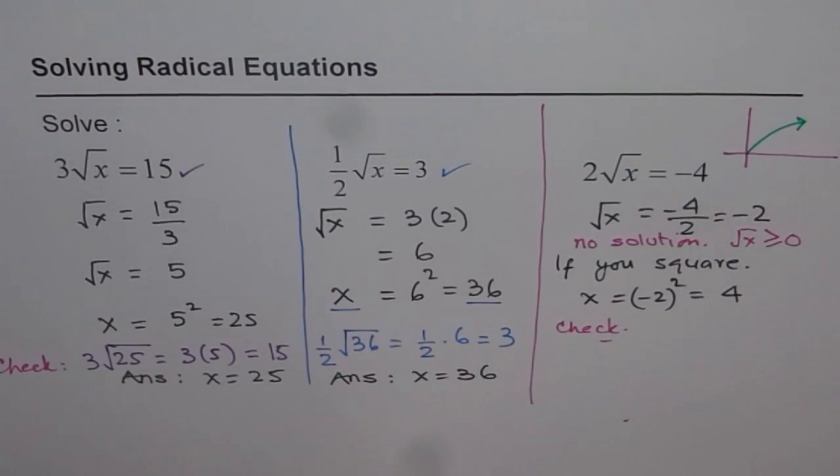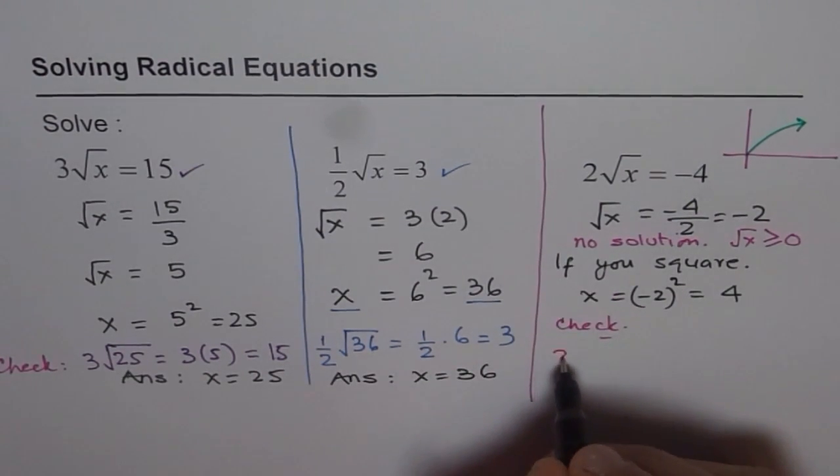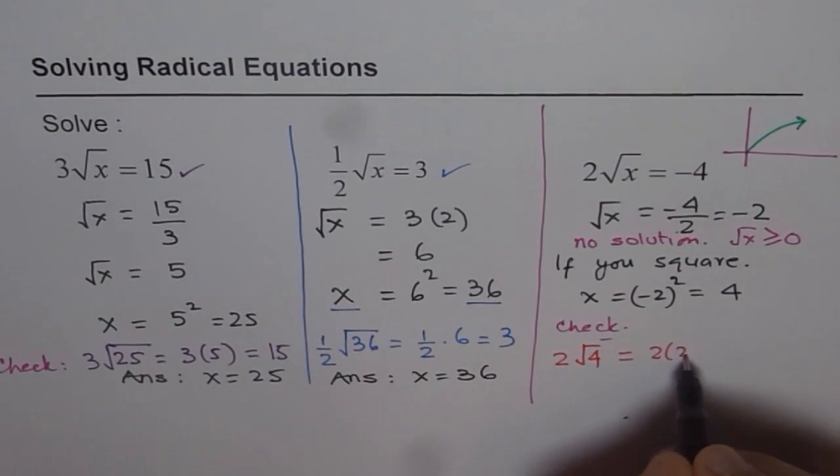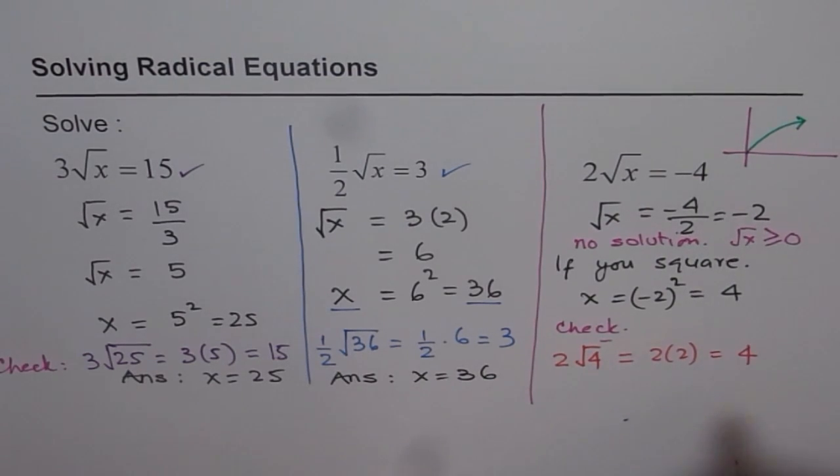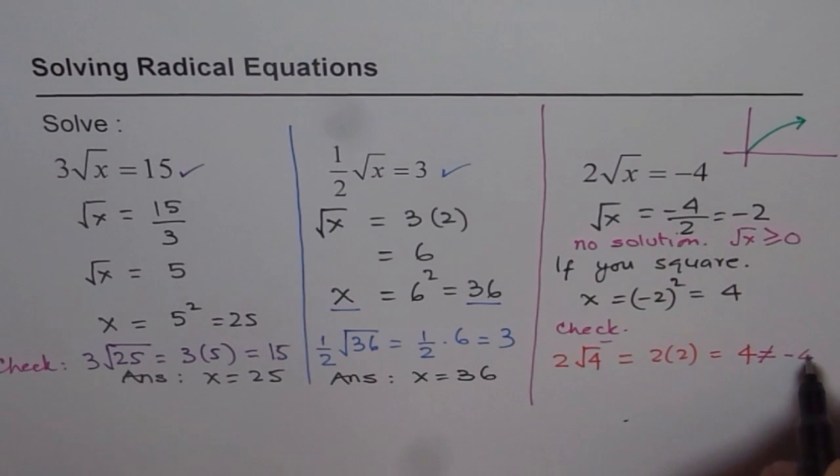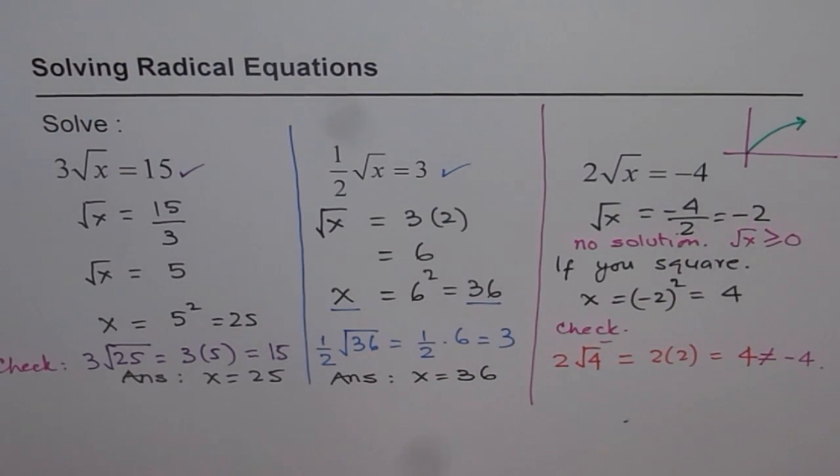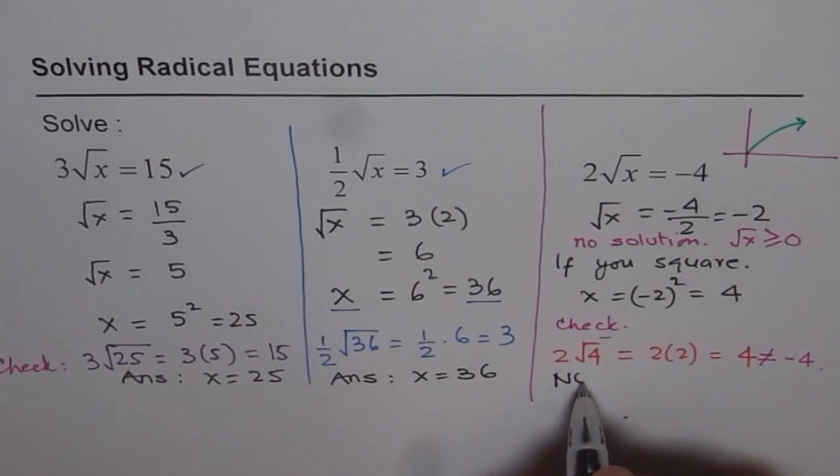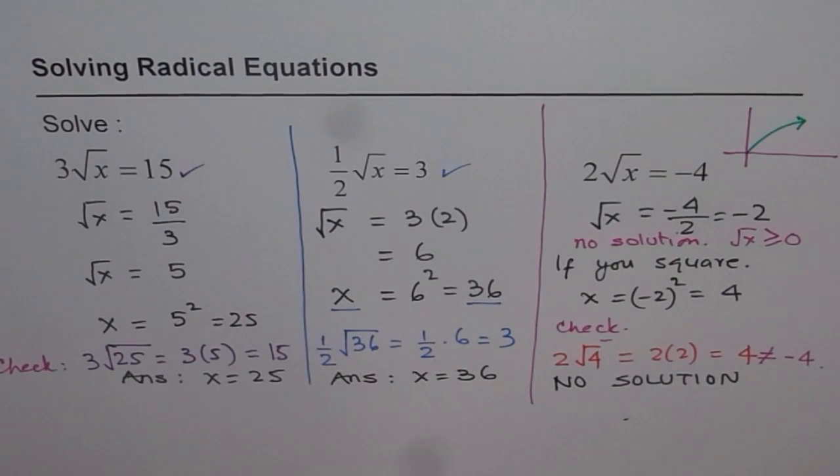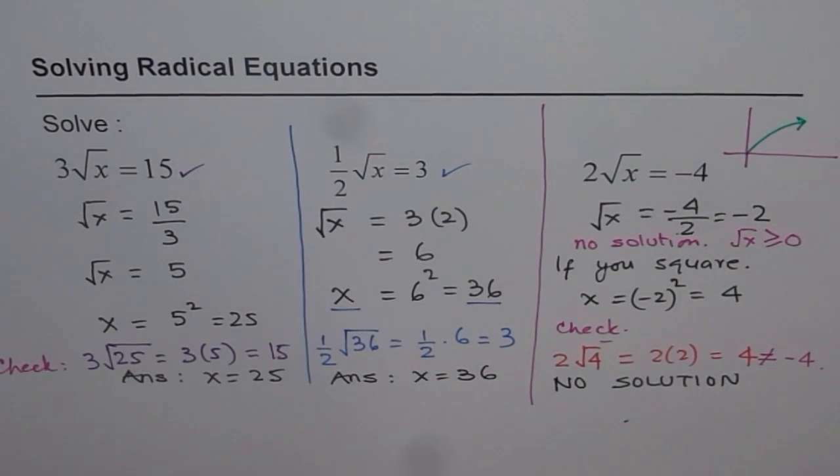Now if you check it, what do you get? You will get 2√4, which is 2 times 2, which is actually 4, which is not equal to -4. And therefore, we say no solution. So that is how you can also do and figure out that it indeed does not have any solution.